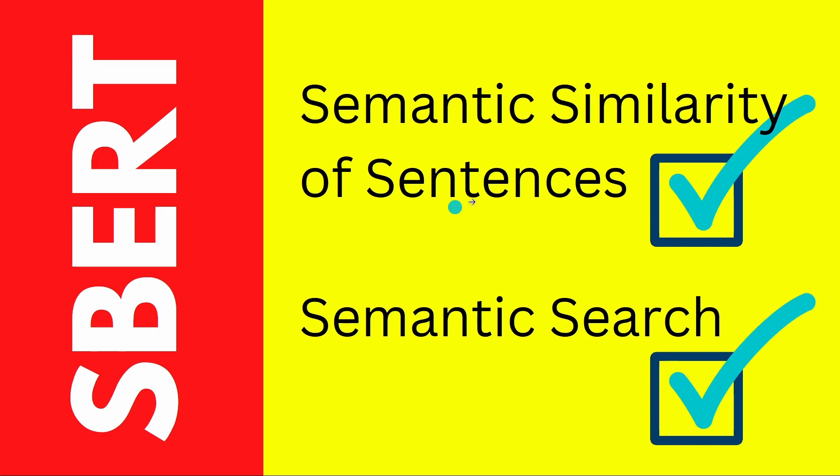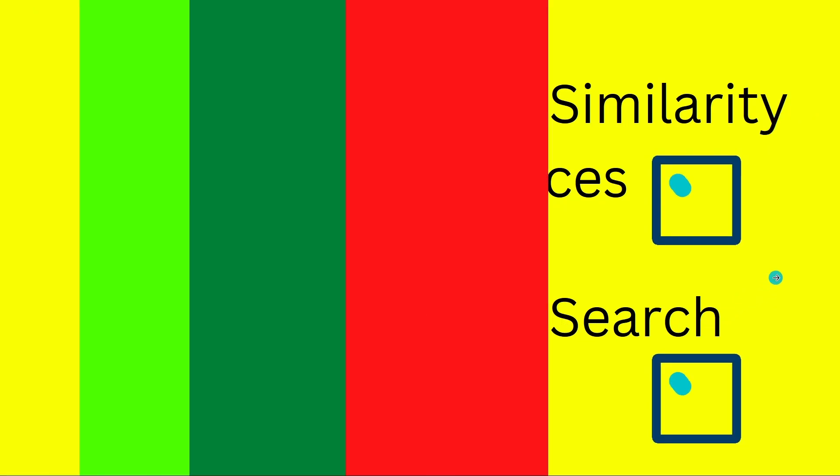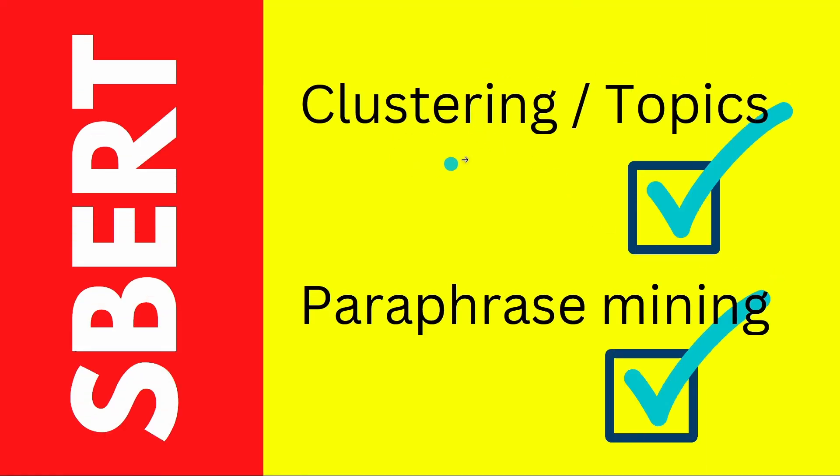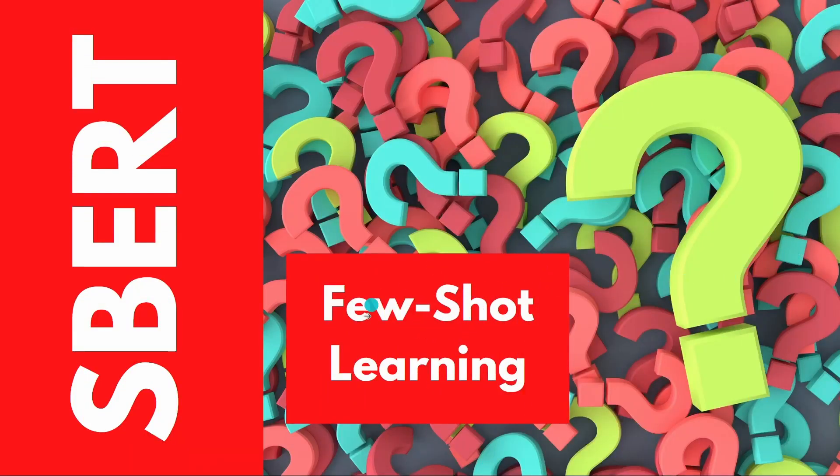So what you know, SBERT we can apply it for semantic similarity of sentences, for semantic search tasks. SBERT we can apply for clustering huge amounts of sentences, millions of sentences, discover the topics. We can use SBERT for paraphrase meaning. But what the hell is the meaning of few-shot learning and why should we use SBERT for it? Why is it better and against what system is it competing?